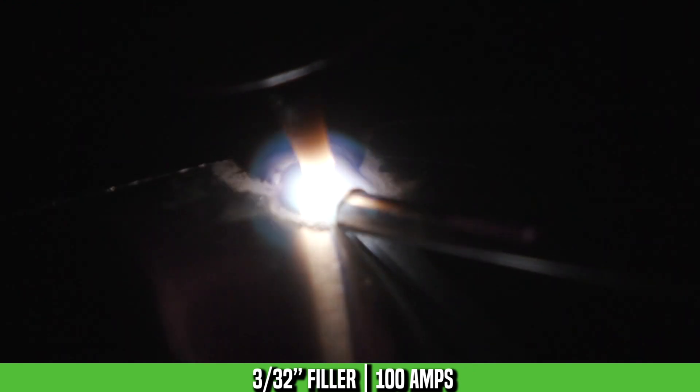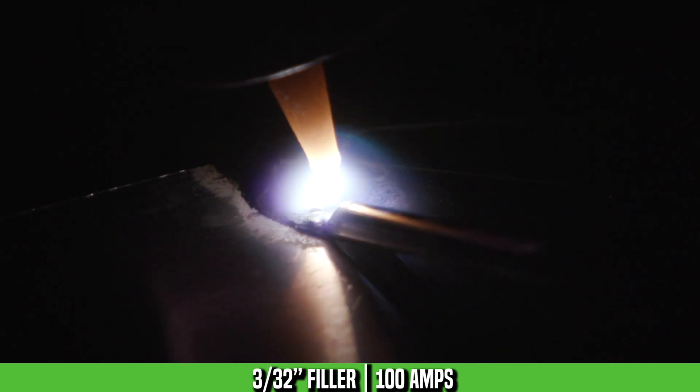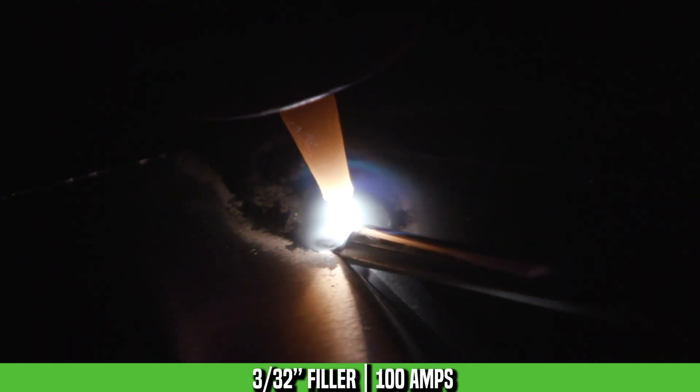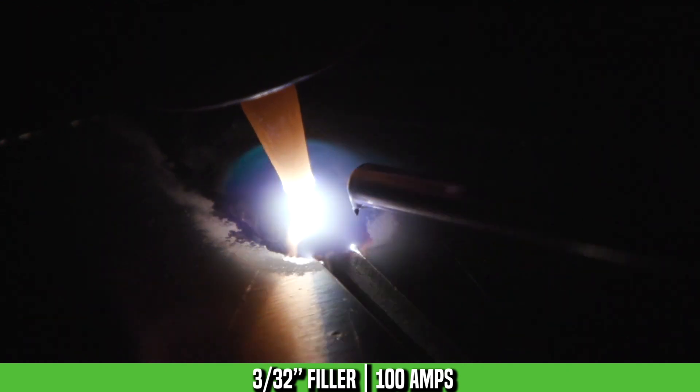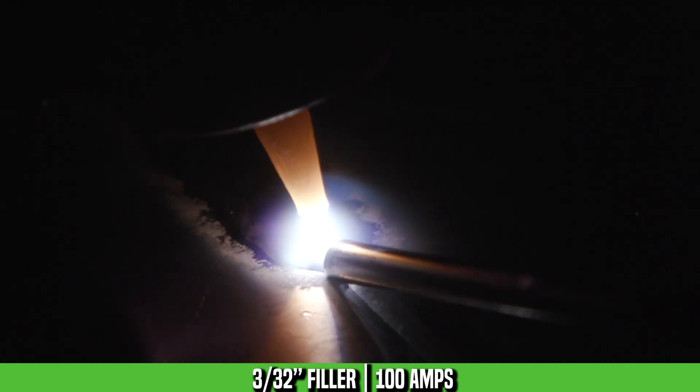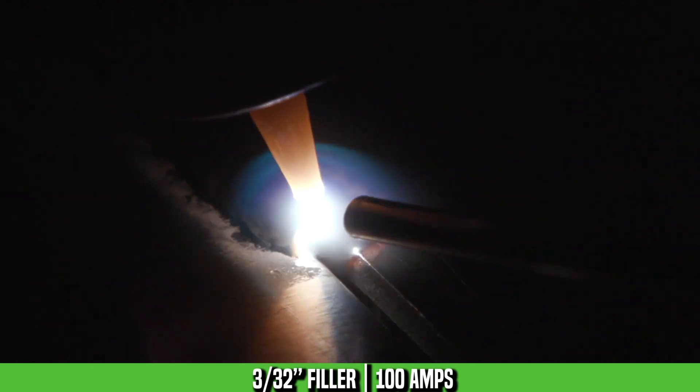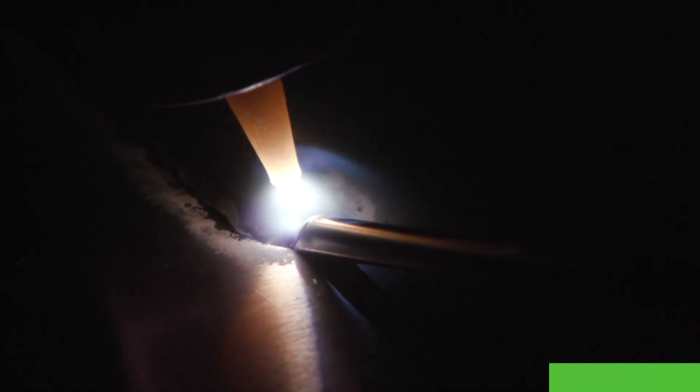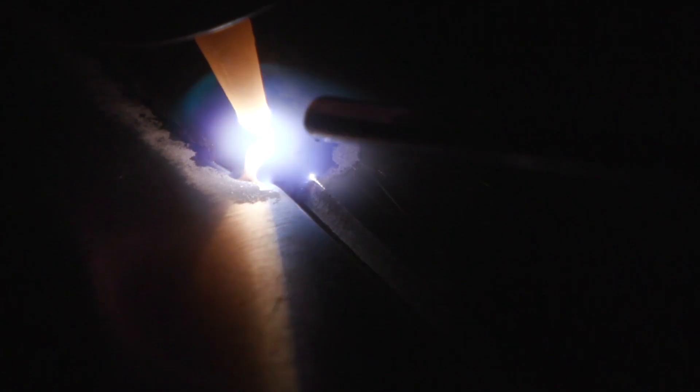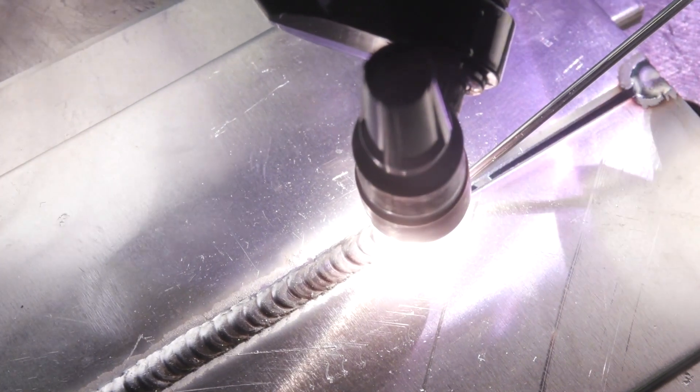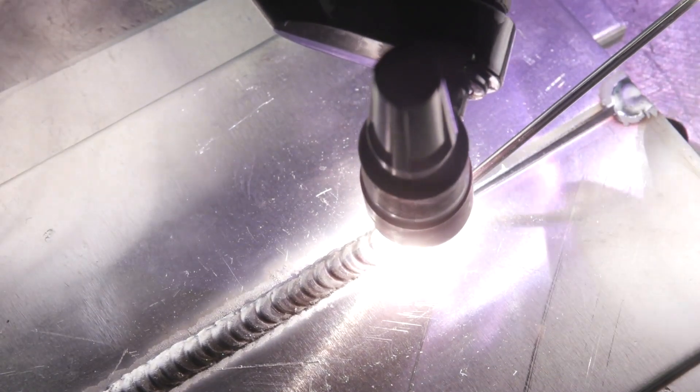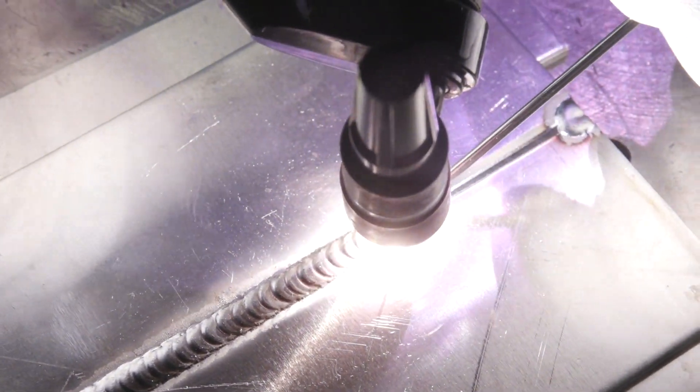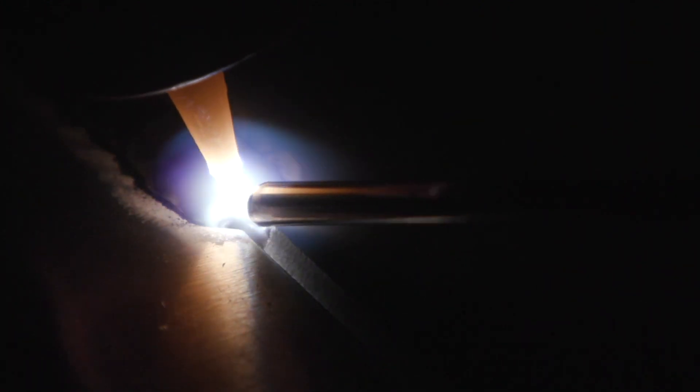So here we go. Another run, same gap, same settings on the machine. The only thing I'm using now is a 3/32nds filler rod instead of 1/16th. So you can see it's a lot easier already to control the puddle, get a nicer bead. We can actually use more amperage now that we have a bigger filler rod because we can control the heat with that bigger filler now. Just a lot easier to run. I'm not having to jam a quarter, a half inch of filler in every dip just to try to keep the plate together. This is a much easier run. It looks better. It's not as grainy. This is a lot easier process now.